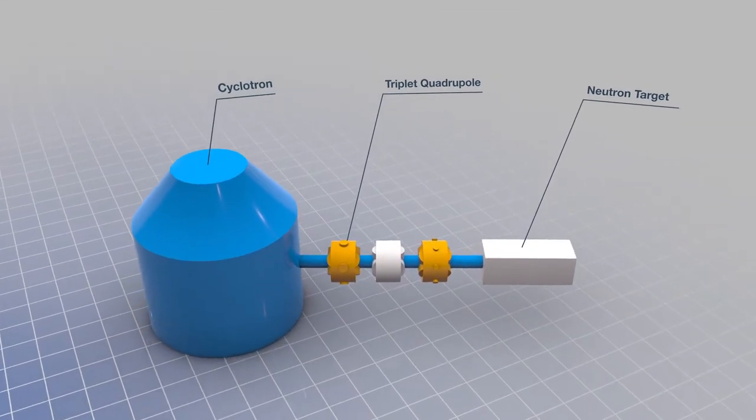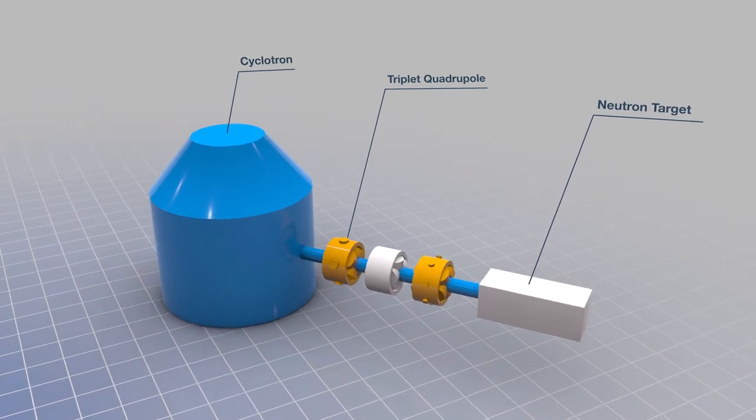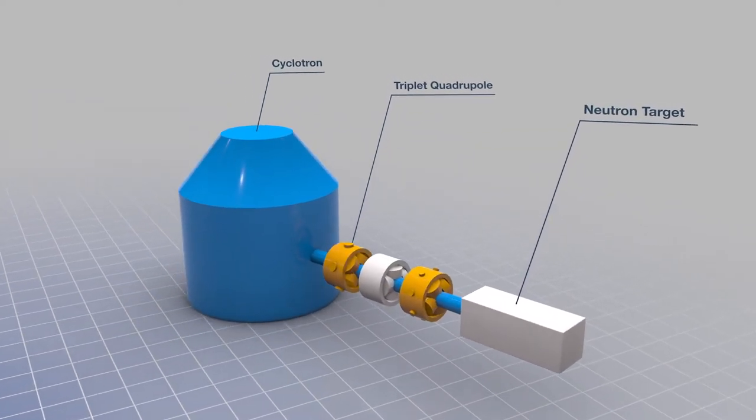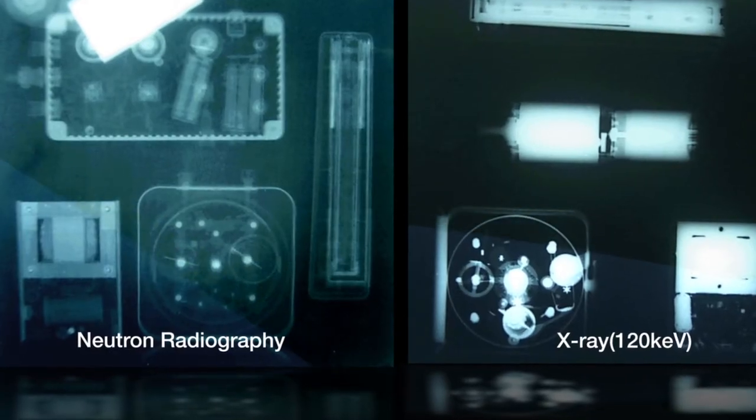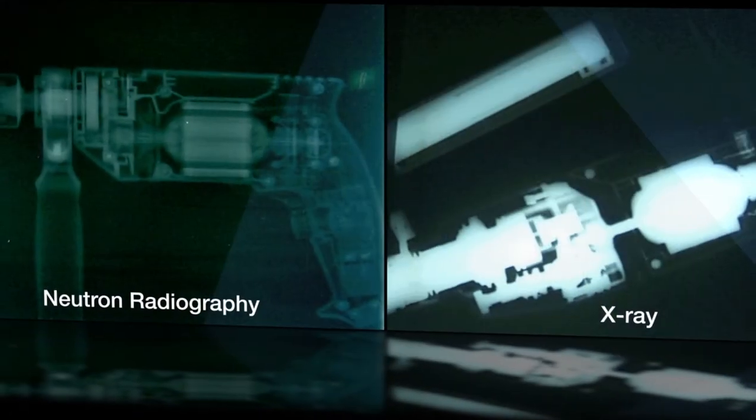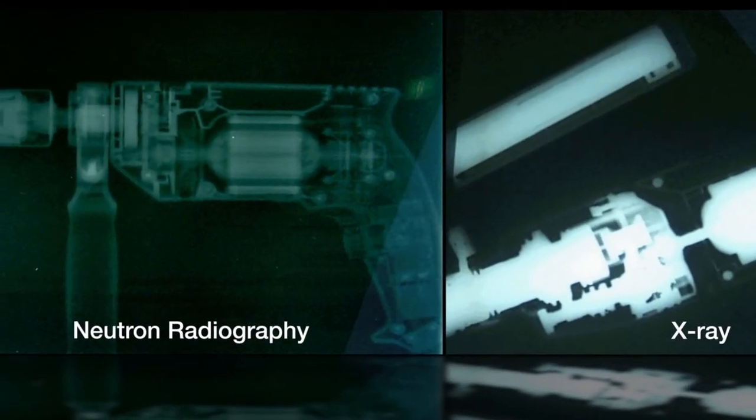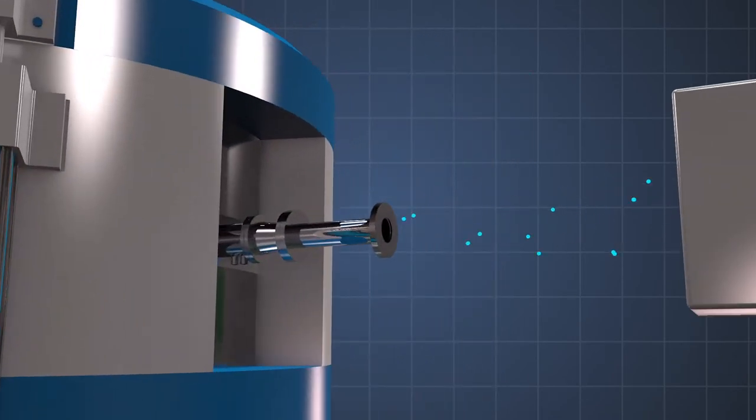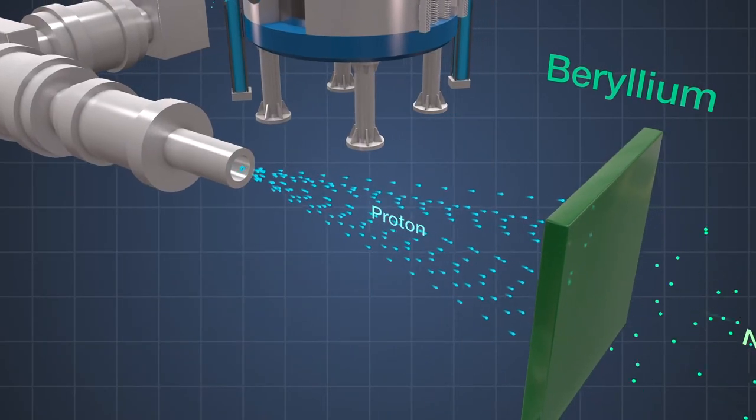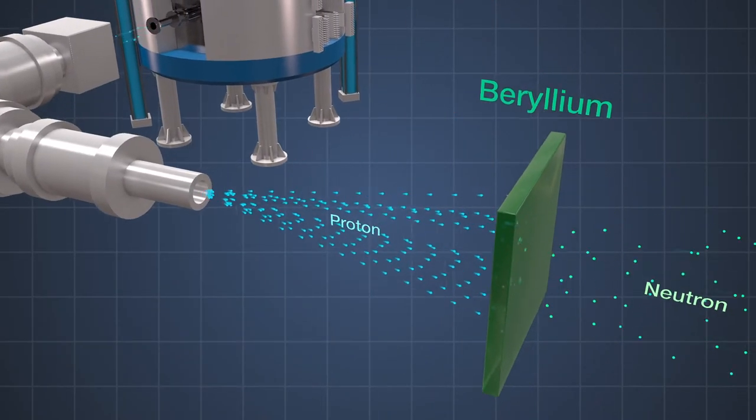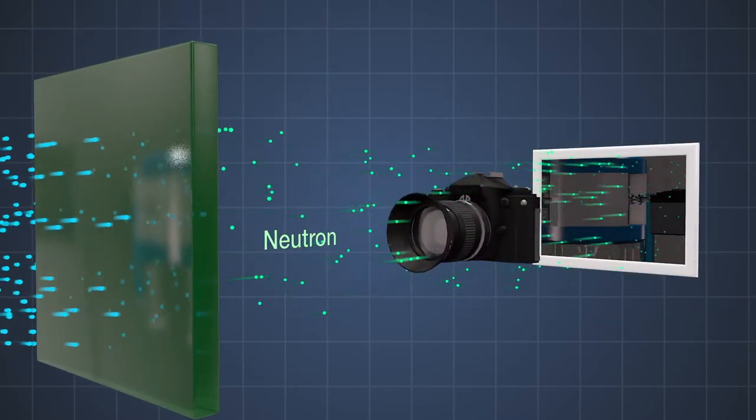The team is also developing a technology to generate neutrons for neutron radiography, which is used for a security search and non-destructive testing by using cyclotron. It is a technology that collides a high-energy proton with beryllium target to release neutrons and use them for a neutron imaging device.